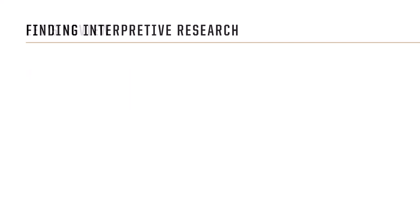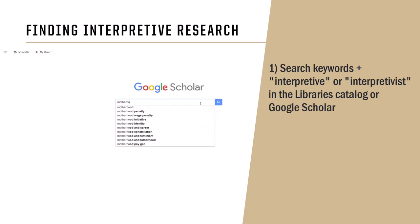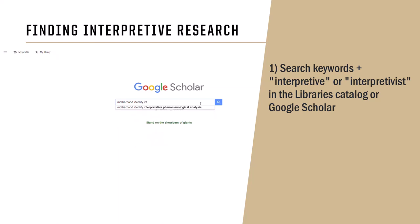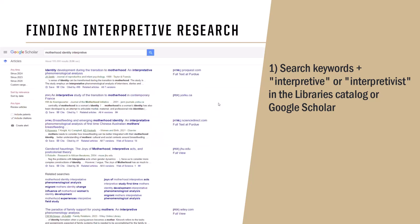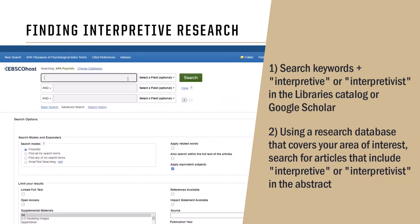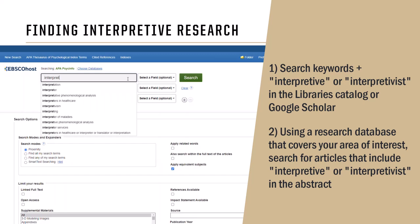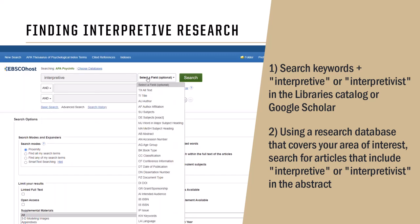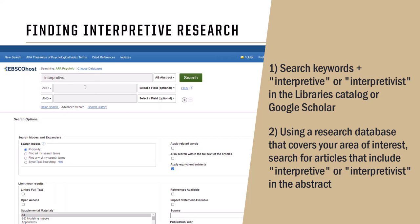So how do you find interpretive research articles relevant to your area of interest? One approach is to search in Google Scholar or the library's main search engine for 'interpretive' or 'interpretivist' plus keywords related to your area of interest. However, searching in a research database that covers your area of interest and specifying that the words 'interpretivist' or 'interpretive' must appear in an article's abstract should get you better results.